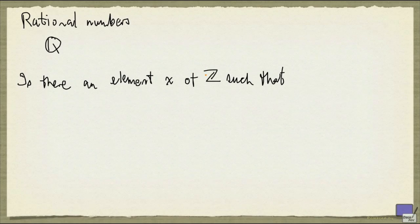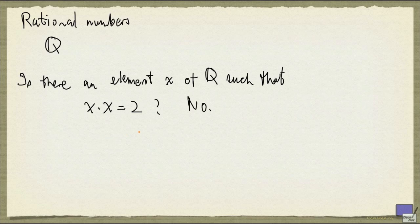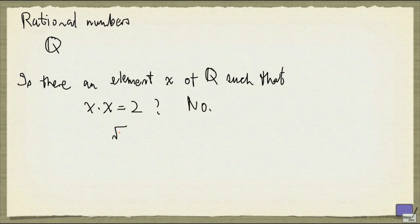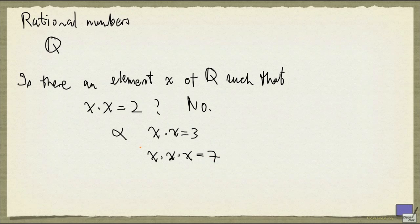Once we have the rational numbers, we can push things even further and ask: is there an element x of Q such that x times x is equal to 2? It's been known to the ancient Greeks that there's no rational number that satisfies this, and there are various proofs for that. If you've been following the idea we've been using, you will be inclined to create a new number to satisfy this equation. You can call it anything you like — some would call it 2 superscript 1 half, some would write the square root of 2, and we can even call it alpha. There are many, many numbers we can add in this way.